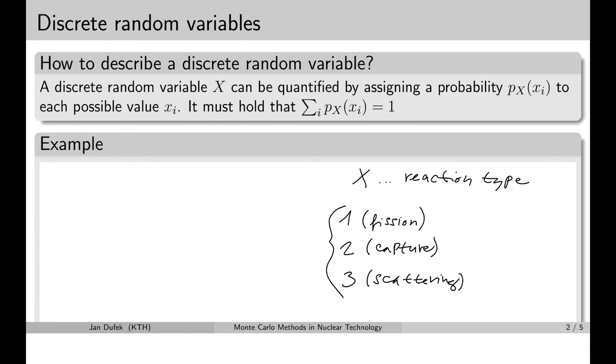These numbers are our values and now we can assign a probability for each possible value. So let's assign probability 50% to the fission reaction. Let's assign the probability 25% to the capture and 25% to the scattering. So these are the probabilities.